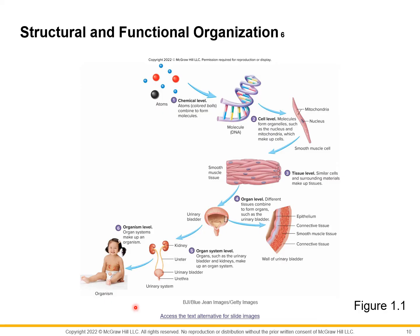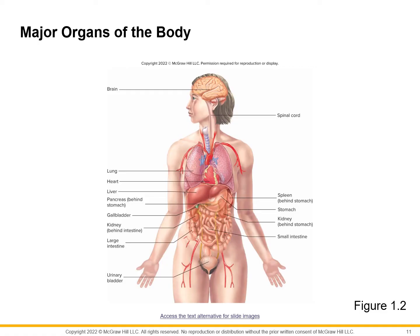This slide shows some of the major organs in the body. We have the brain and spinal cord — main organs of the nervous system; the lungs — main organ of the respiratory system; the heart and blood vessels — main organs of the cardiovascular system; major organs of the digestive system in the abdominal cavity; and the urinary system and reproductive organs in the pelvic region, which differ in structure between males and females.